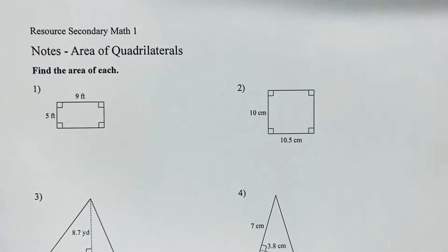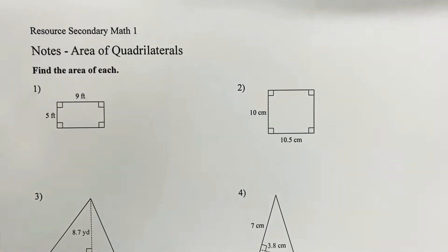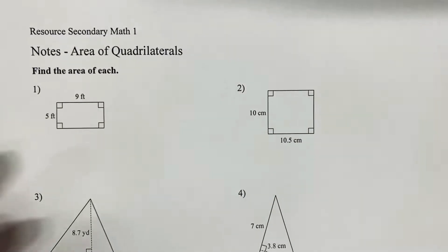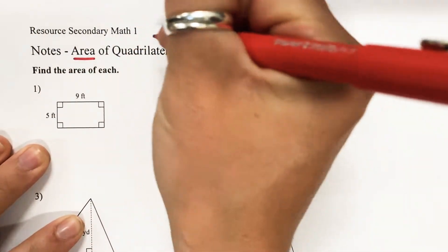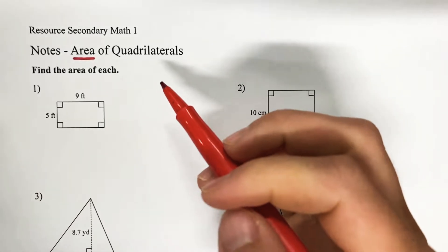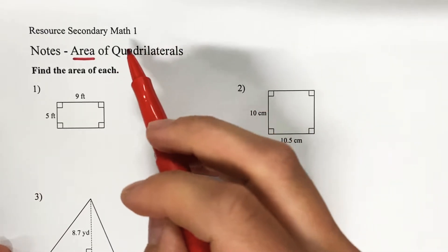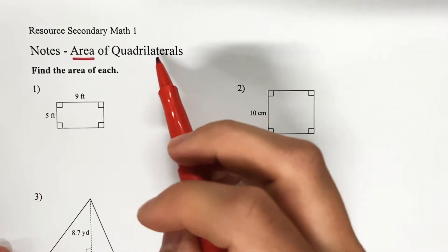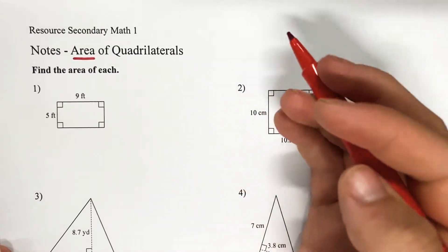My Secondary Math 1 class, we are going to be continuing to talk about area. So last time in class we talked about area of rectangles and triangles. Today we're going to be talking about the area of quadrilaterals.